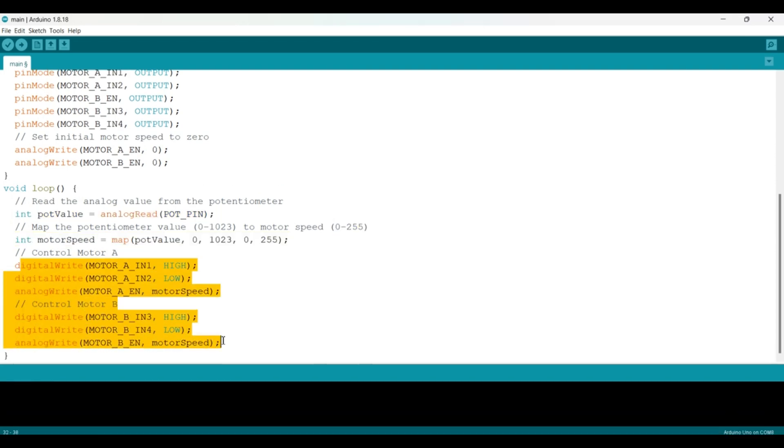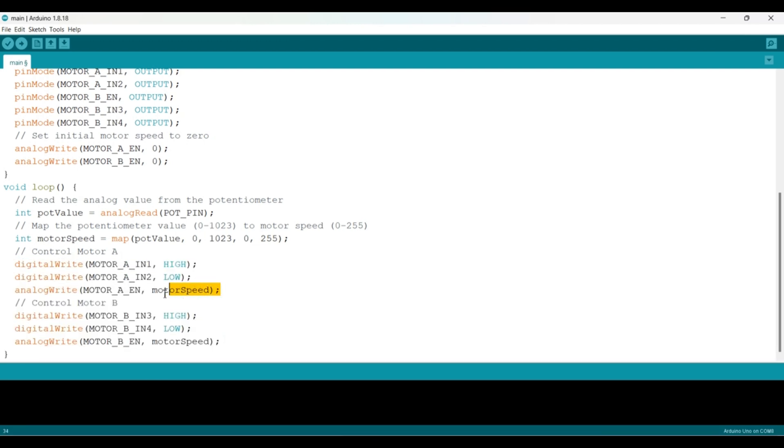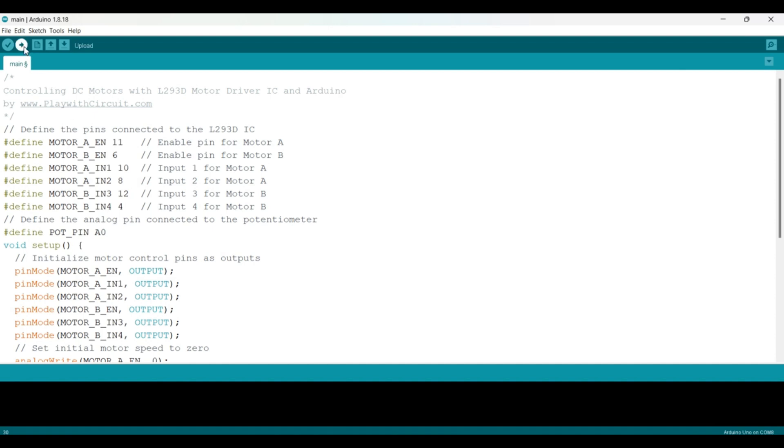So basically this code is used to control the direction of motor. IN1 is set high. This line is used to control the speed of motor using a potentiometer. So that's all about the code part.